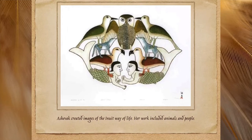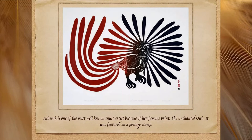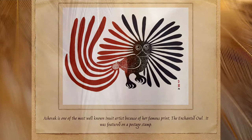Ashavak created images of the Inuit way of life. Her work included animals and people. Ashavak is one of the most well-known Inuit artists because of her famous print, The Enchanted Owl. It was featured on a postage stamp.